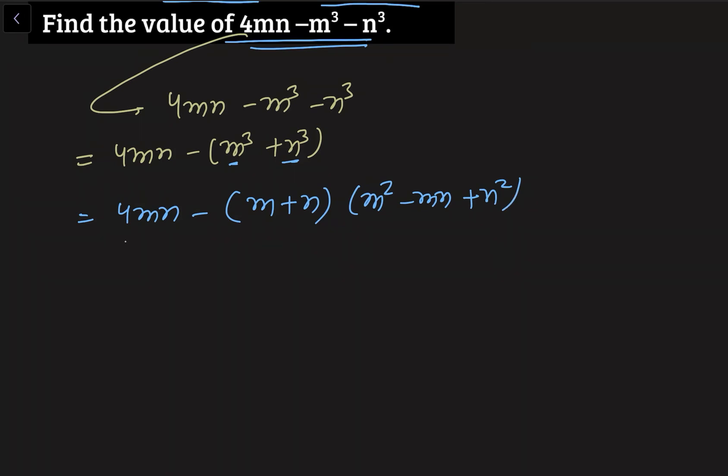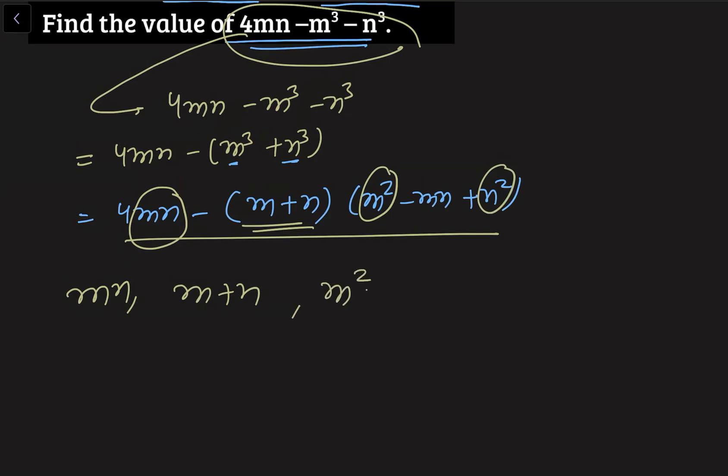So can I say from this equation that to find the value of this expression we need to find basically mn, m + n, and m² + n².